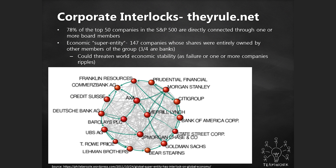Moving more to the business side, there's something called corporate interlocks — how people sit on the board of different corporations. It's an issue of power structure. 78% of the top 50 companies in the S&P 500 are directly connected to one or more board members. You might have heard 'too big to fail' — there's also 'too connected to fail.' They're all supporting each other. There was even an economic super entity: 147 companies whose shares are entirely owned by members of the group, and three-fourths of those are banks. This really threatens economic stability as failure of one or more companies ripples through the whole economic system.